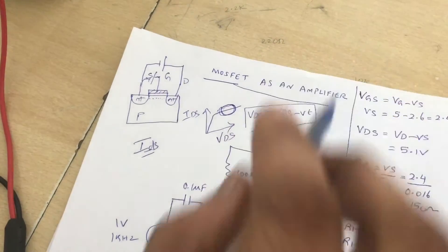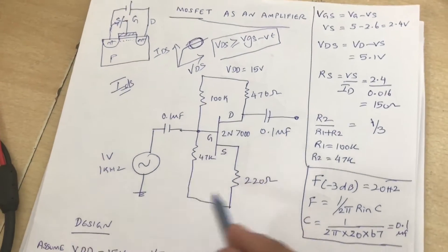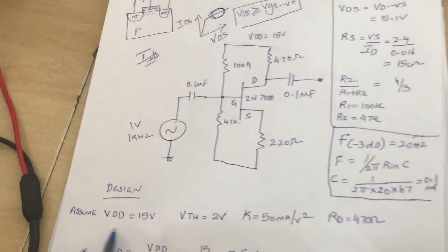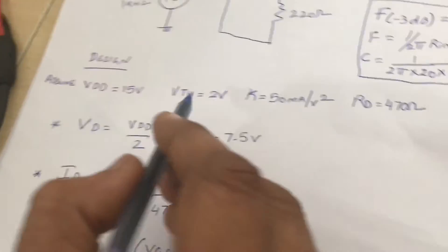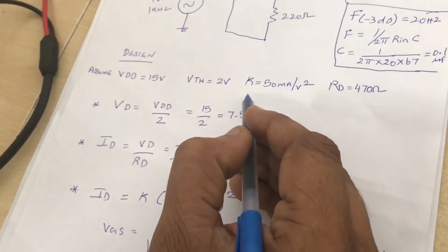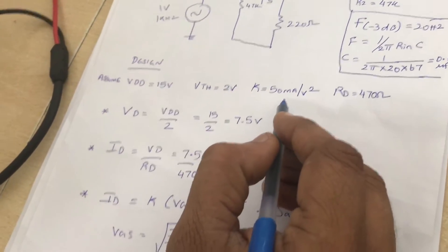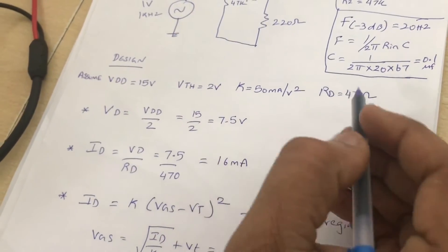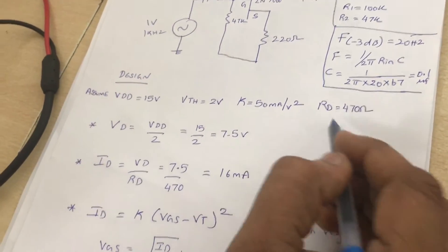Now we come to the design part of the MOSFET. We are going to assume VDD as 15 volts and my threshold voltage as 2 volts and the transconductance parameter as 50 milliamps per volt square, and I am going to assume the drain resistance is 470 ohms.